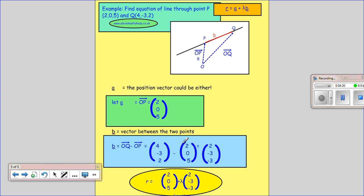So that will be 4 take away 2, minus 3 take away 0, and 2 take away 5. And once I've got these two vectors, I've got the vector which takes me onto the line and the vector which is parallel to the line, I can then write the equation of the line through P and Q.